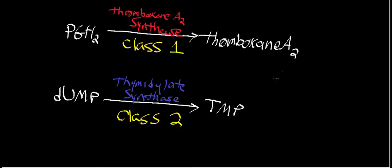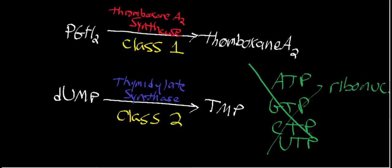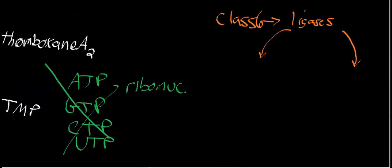Our nucleoside triphosphates are ATP, GTP, CTP, and UTP — we're using our ribonucleotide triphosphates, not the deoxys. The whole point is that synthases don't use these — they're simple condensation reactions that don't use nucleoside triphosphates. Also, their names are pretty ambiguous and don't tell you much about the mechanism.